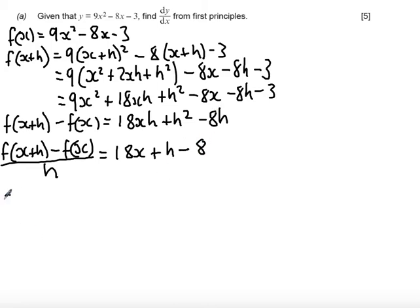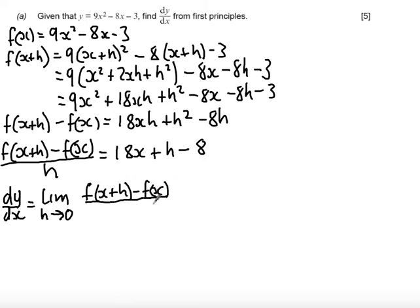The final step is to say that dy by dx, and this is important, is equal to the limit when h tends to 0 of f of x plus h minus f of x over h. This step must be written out in full or you miss important marks in the exam. Taking the limit of h tends to 0, any term with h in it disappears. So we get left with 18x minus 8.